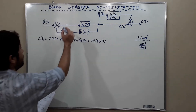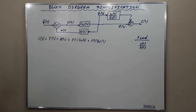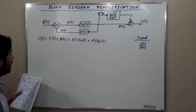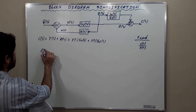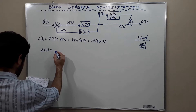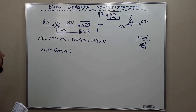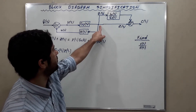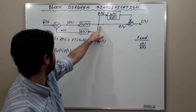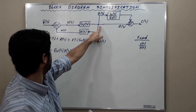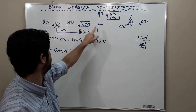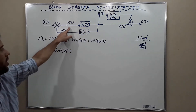Here is X of S. Now we need to prove that this move is right. We are going to prove this. Observe again that Z of S is equal to G2 of S times X of S. Where is Z of S? Z of S is here. This is Z of S. And we wish to prove that Z of S is equal to G2 of S times X of S.